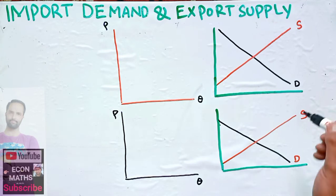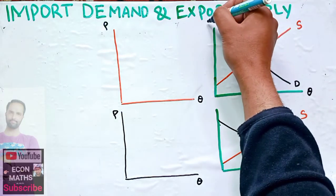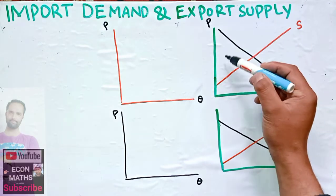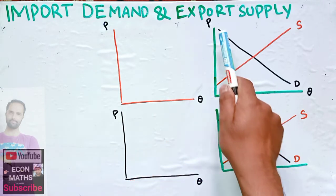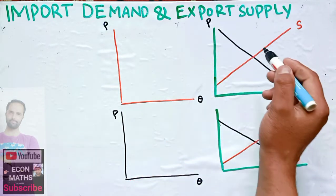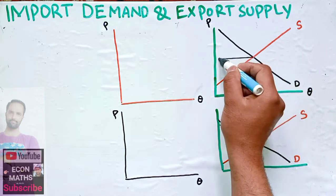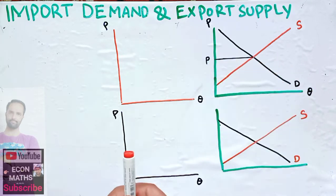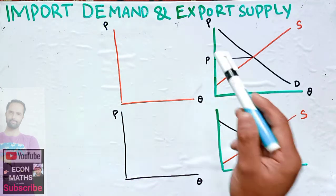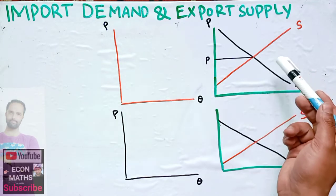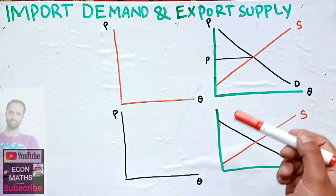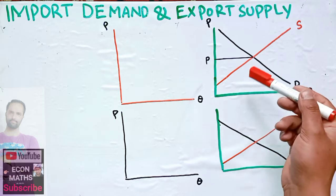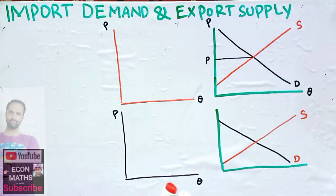On this graph, the horizontal axis has quantity and the vertical axis has price. This curve is the domestic demand and this denotes the domestic supply. When domestic demand and domestic supply intersect each other at price P, this is called the autarky price — the price at which a country does not import anything, because domestic demand is fully met by domestic supply.